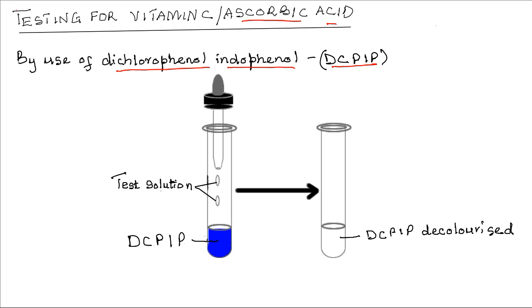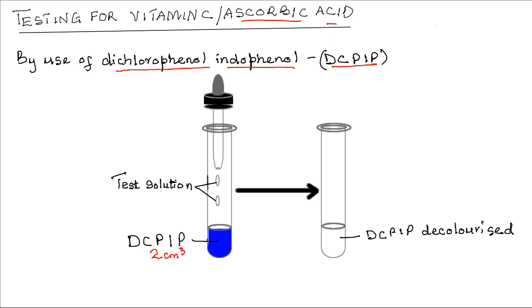The DCPIP, which is blue in colour, is placed into a test tube. We place about 2 millilitres, 2 cubic centimetres of DCPIP into a test tube.